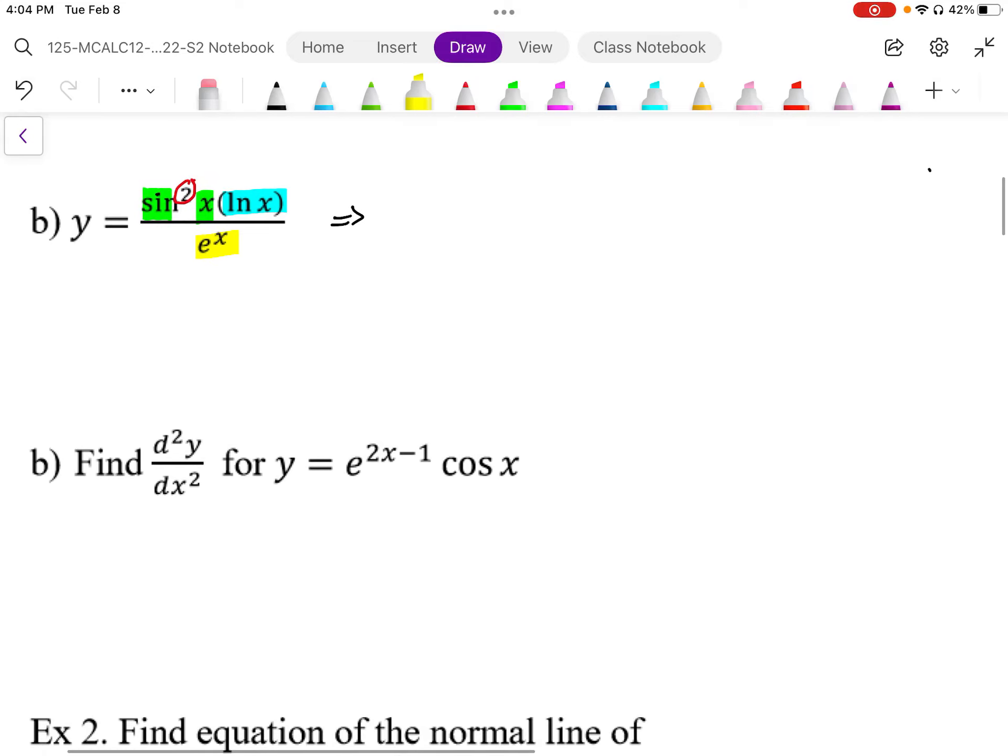So differentiating this one here, we have a lot of things going on. We have a product rule, so sine and log. We've got the sine embedded inside a squared function, and we also have the quotient rule here.